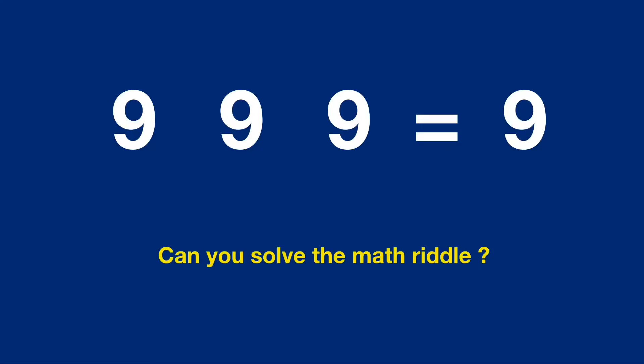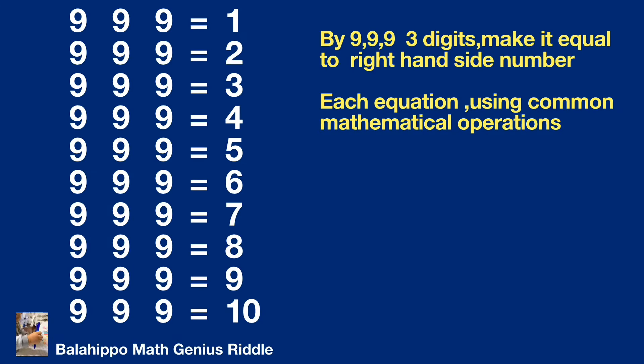Hello, let's solve the matrix number puzzle. Take nine, nine, nine - three digits - using common mathematical operations to make it equal to one, two, three through ten.